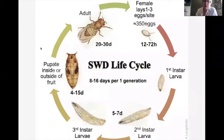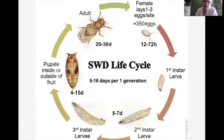It's important to understand the life cycle. Starting with the adult: an adult fly lives about 20 to 30 days. The female lays one to three eggs per site, for a total lifetime of about 350 eggs. A really key thing is how fast they hatch — only 12 to 72 hours. Then they go through three larval instars: first, second, and third. Often the first is so small it would be difficult to see with the naked eye, but we can definitely see the third instars. All three instars together take only five to seven days — a very, very fast life cycle.